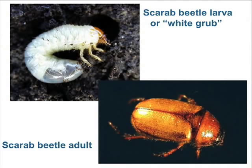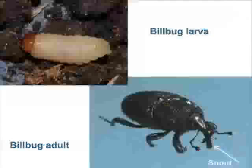Finally, white grubs are the larval or immature stage of a large group of beetles known as the scarab beetles. These hard-bodied, shield-shaped adult beetles do not usually harm turf plants, but it is much easier to identify and detect the adults as opposed to the grubs, because the adults live above ground and are frequently seen flying around.